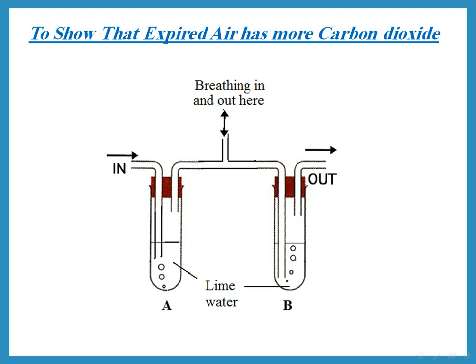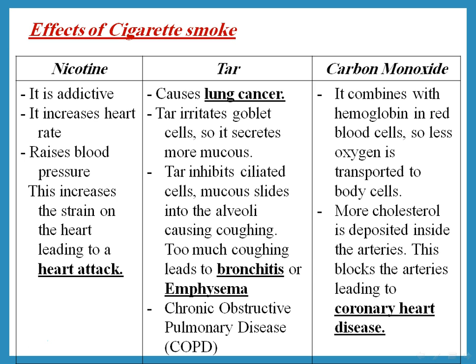Cigarette smoke contains three main harmful substances. The first is nicotine, which is the addictive substance — the body gets used to it and needs more, making it very difficult to stop smoking. Nicotine is addictive and also increases heart rate and raises blood pressure, putting strain on the heart, which may lead to heart attack or heart disease.